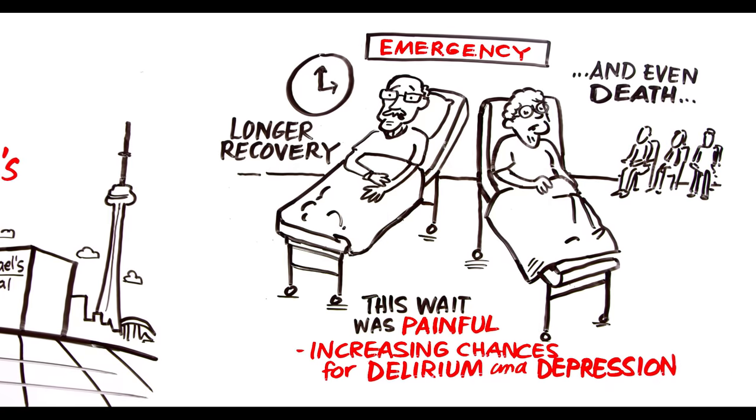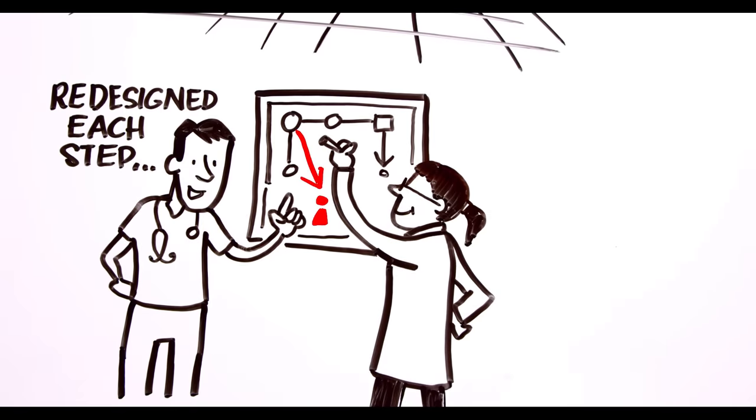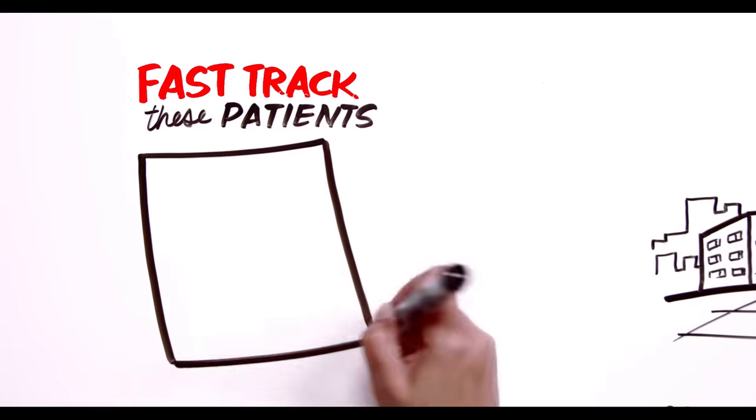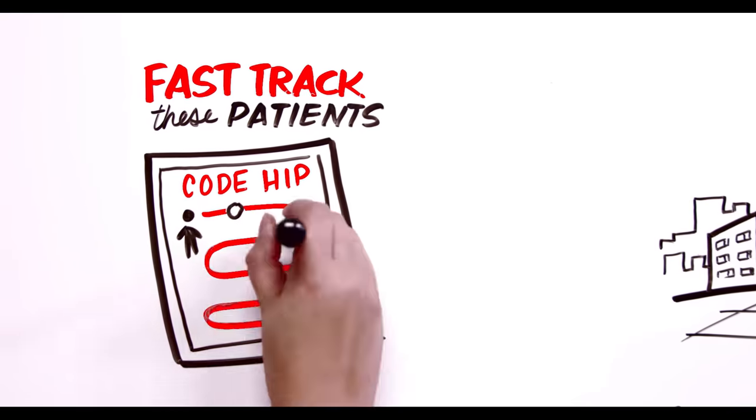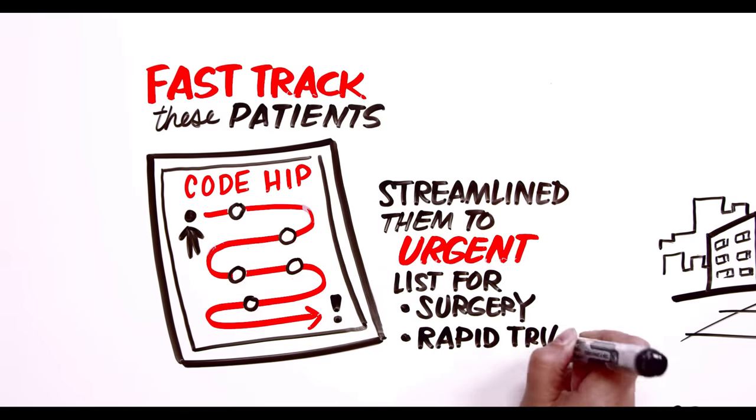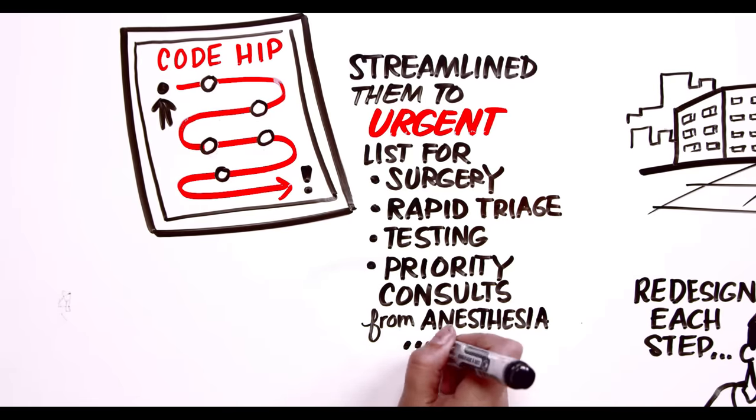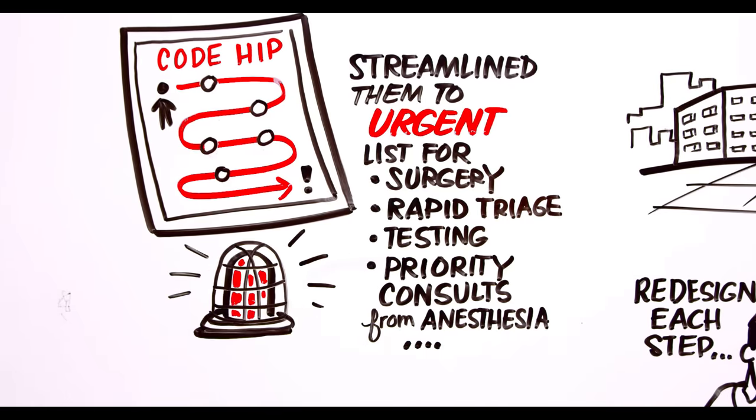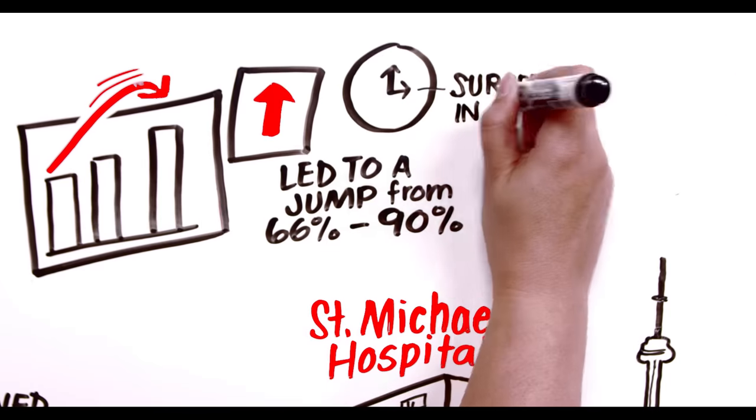The care team scratched their chins, mapped out and redesigned every step of the journey to surgery in order to fast-track these patients. They created a 'Code Hip' called as soon as the patient arrives. This streamlined them to the urgent list for surgery. Rapid triage, essential testing, priority consults from anesthesia and internal medicine, and so on. All these tweaks led to a jump from 66% to over 90% having surgery within 48 hours.